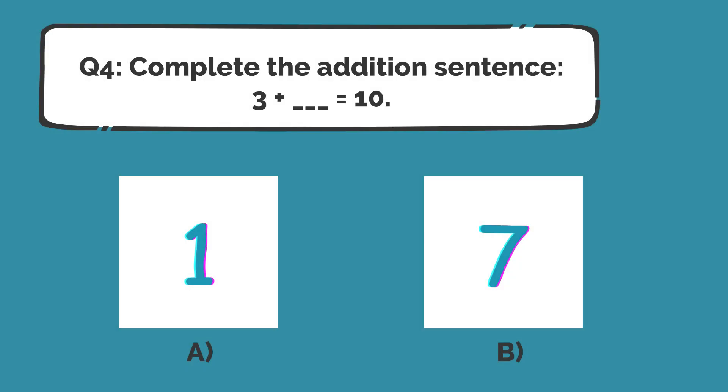Complete the addition sentence! 3 plus dash equals 10? Is it Option A or Option B? Think about it! The correct answer is Option B, 7! 3 plus 7 is equal to 10.